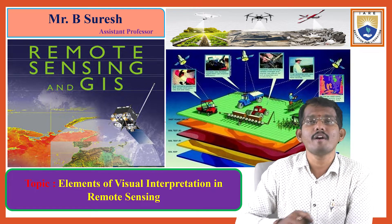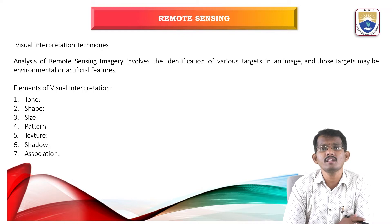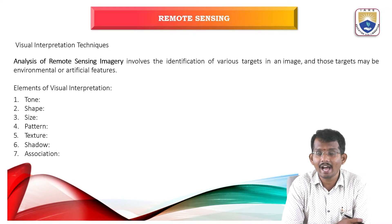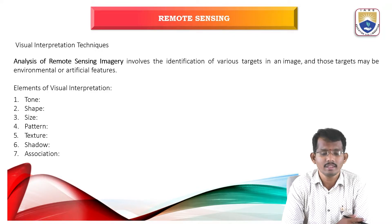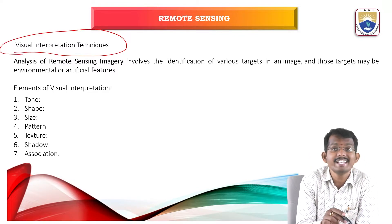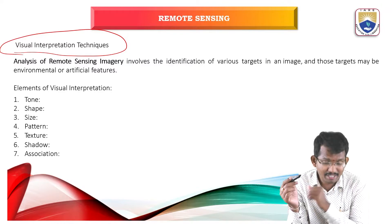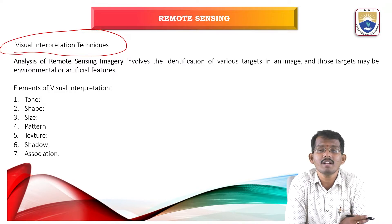What are the elements used for visual image interpretation techniques? In remote sensing, data have been extracted in terms of some bands or quadrants. The satellite absorbs the radiation energy, stores the data, and that data undergoes interpretation techniques — visual image interpretation technique or digital image interpretation techniques. Analysis of remote sensing imagery involves the identification of various targets in an image, and those targets may be environmental or artificial features.